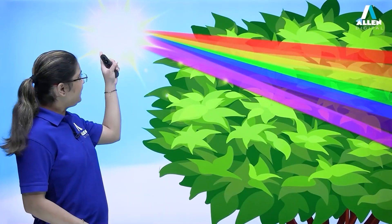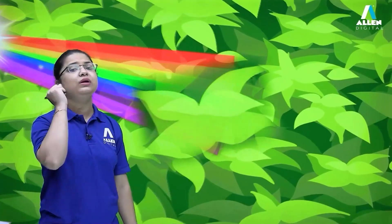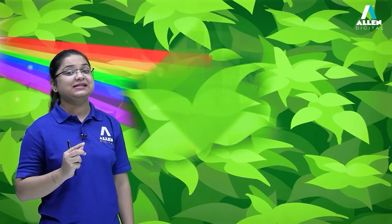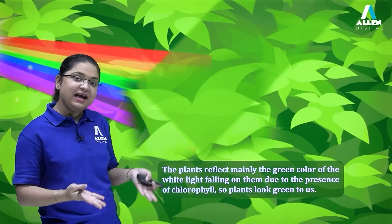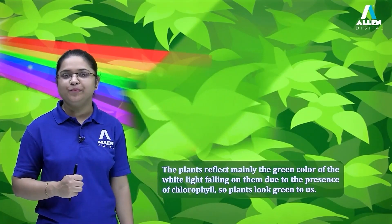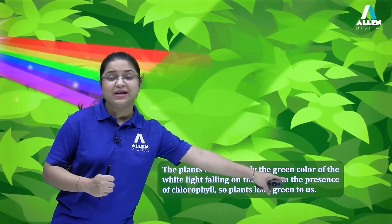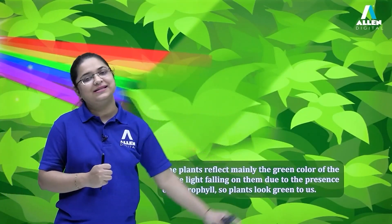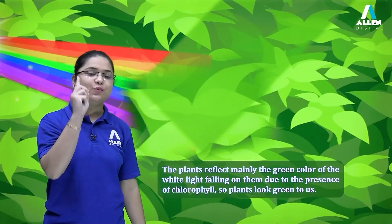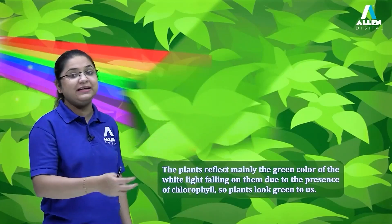White light consists of all the VIBGYOR colors. But when we look at a plant, we see it appears green. All the colors are absorbed by the green leaves of the plant; only one color is reflected back — the green color. So the reason plants appear green is that they reflect the green color out of the VIBGYOR due to the presence of chlorophyll.